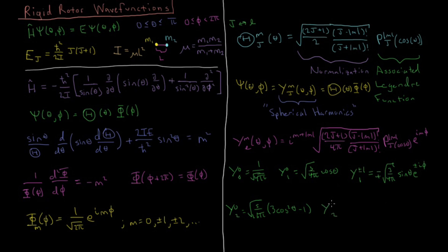And then Y 2 for plus or minus 1, it's going to be minus plus again, switch the sign. Square root of 15 over 8 pi, sine theta times cosine theta, e to the plus or minus i phi.